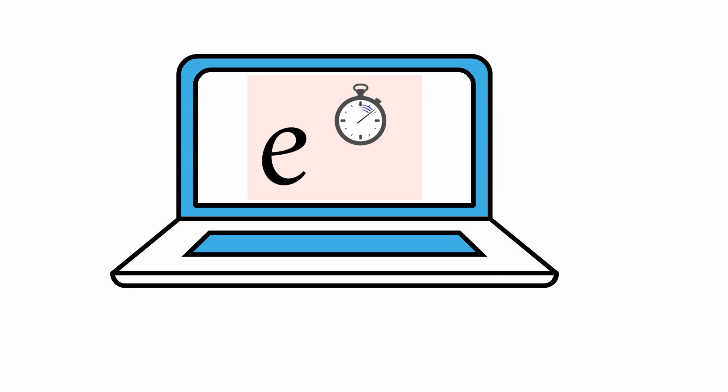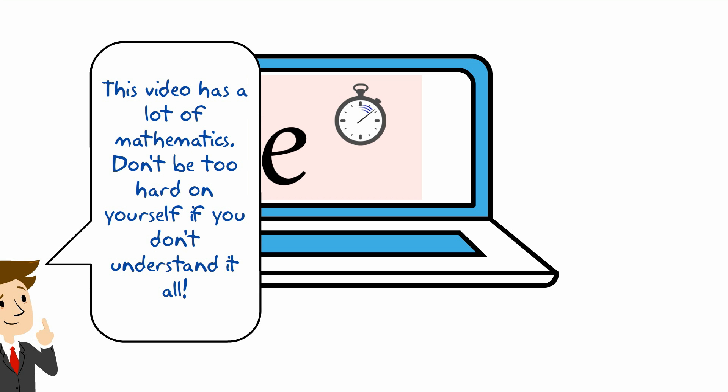One of my most popular videos is 'the number e is everywhere,' where I show that the number e comes up in a lot of mathematics and a lot of real life. So I've had a lot of questions about but why, but how, and so I thought I'd do this video where I explain some of the mathematics behind what I did in the first video. So good idea to have a look at my first video, the number e is everywhere, before you have a look through this video.